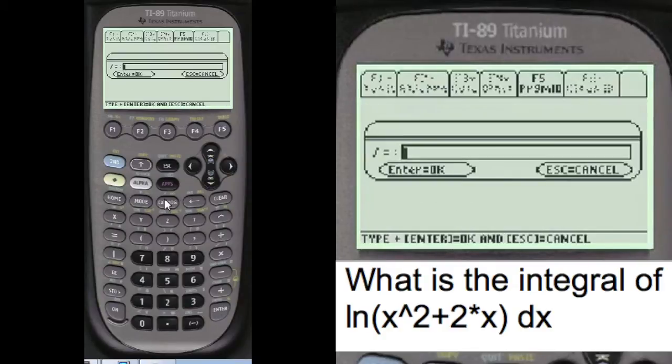Now we're going to enter the function. You have to press alpha before you enter anything. These entry lines here, alpha, second, log, which puts the log in here. x squared plus 2 times x. Close off the parentheses.